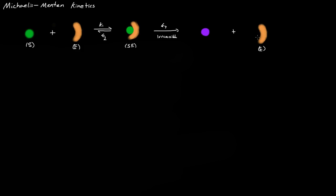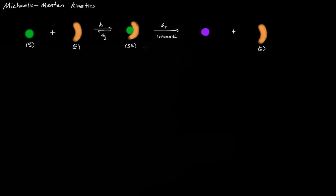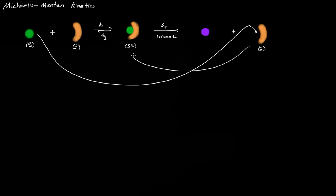The free enzyme E released here is the same enzyme as the one that entered. These two E's represent the same concentration, because all it does is go back so that another substrate can come in and reform the substrate-enzyme complex.